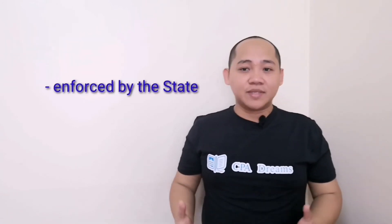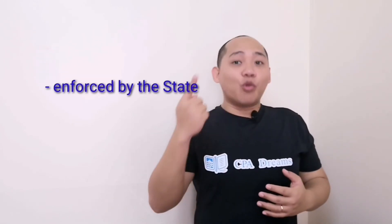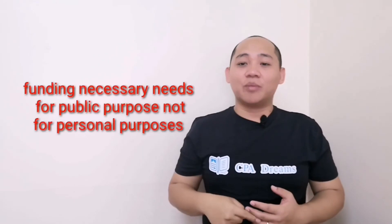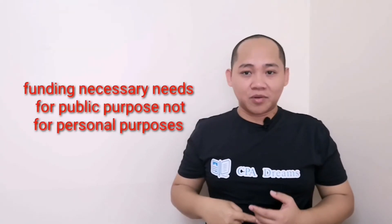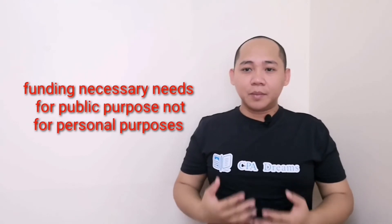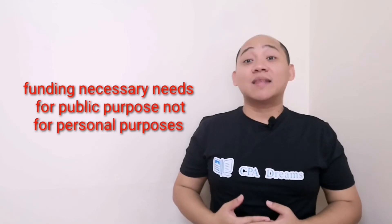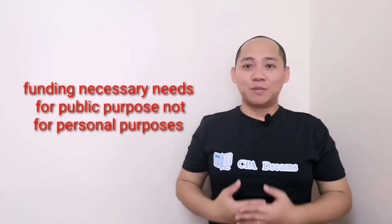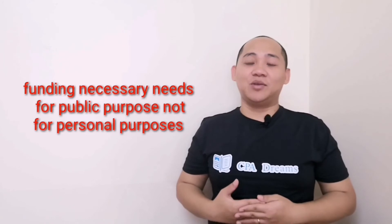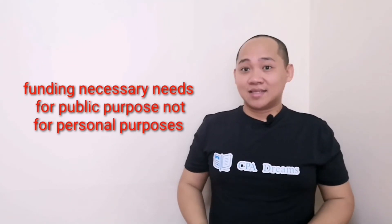Taxation co-exists with the state for funding the necessary needs of the government for public purpose. This means the money collected from the people as tax should be used for public purpose, so there should be no corruption of this money because it is to be used for citizens who pay their taxes and residents as well.